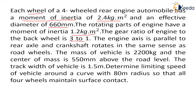The engine axis is parallel to the rear axle and the crankshaft rotates in the same direction as the road wheels. Mass of the vehicle is 2200 kilogram. The center of mass is 550 mm above the road, denoted by small h. Track width is 1.5 meter, denoted by small w.